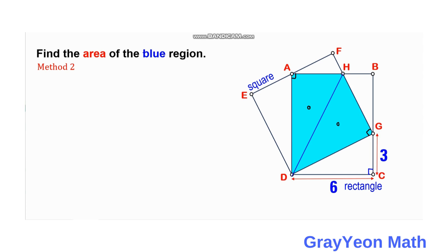We label the side of square EFGD as s, so this side is s and this is also s. Triangle GCD has a ratio of 2 to 1, as established in Method 1. The triangles are similar because of the angles, so AE will be s over 2.